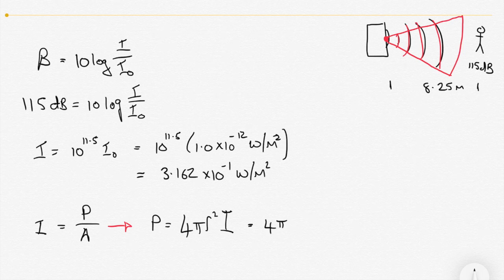Now we've got, that gives us 4 pi times what's the radius? Well, the radius is this 8.25 meters, which is how far we are away. Or where we're measuring our 115 decibels. So that's 8.25 meters squared is the surface area of our sphere at that point.